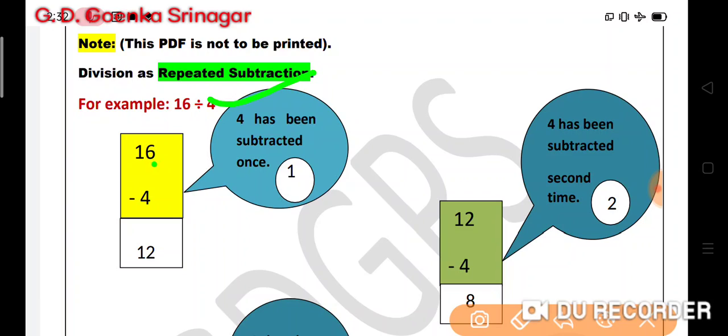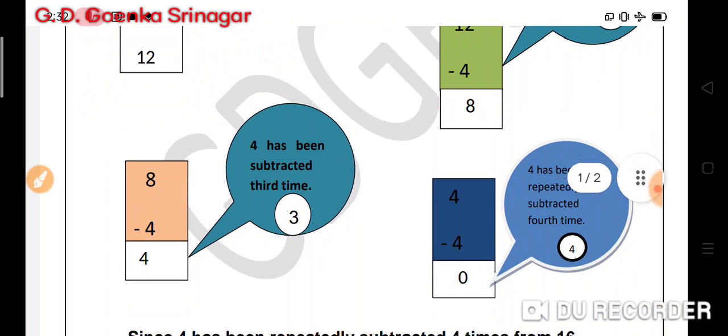4 has been subtracted once. This is 16 minus 4 equals 12. Then we will subtract 12 minus 4, we will again subtract 4 from 12. This is for the second time, and that is equal to 8. Now we will subtract 4 from 8, and 4 has been subtracted for the third time.